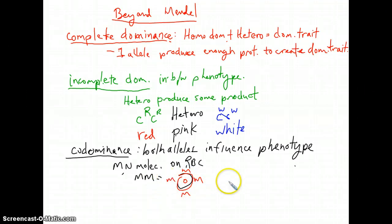Those who are heterozygous, so they have an M gene and an N gene, produce red blood cells that have both M molecules and N molecules on the surface of the cells.